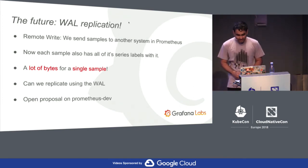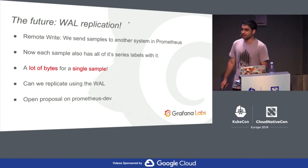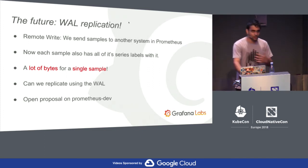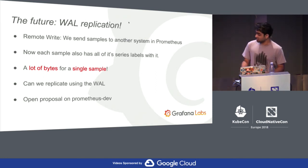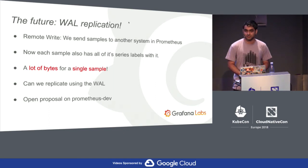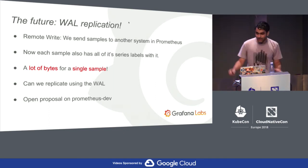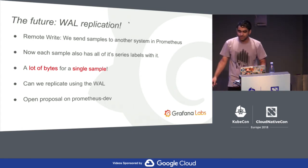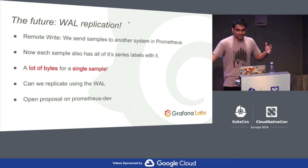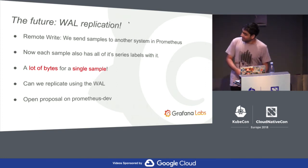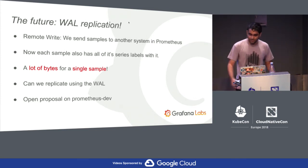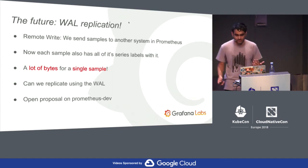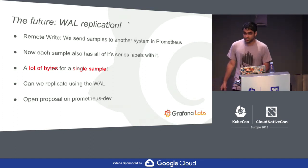Write-ahead log based replication: we have a write-ahead log, which already gives us fast startup times — very fast to restart Prometheus. The other thing the write-ahead log will let us do is replication. Right now, remote storage in Prometheus sends each sample along with all its labels and strings, sending much more data than needed. With the write-ahead log, we just replicate the log — we'll make it an interface and a library so anybody can integrate with it. It's much more efficient. There's a proposal open on the Prometheus Dev mailing list — just Google 'Prometheus Dev write-ahead log replication.'